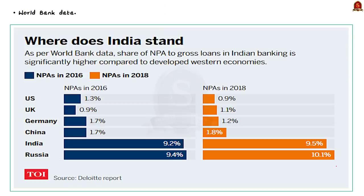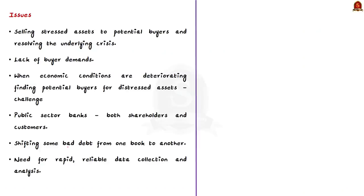As per World Bank data, the share of NPAs to gross loans in India is significantly higher compared to developed Western economies like the United States, United Kingdom, Germany, and China. Now, we will move on to the issues associated with bad banks. One issue that may arise is selling stressed assets to potential buyers — in the current situation of deteriorating economic conditions, finding a potential buyer for distressed assets can be a very significant challenge due to lack of buyer demand.